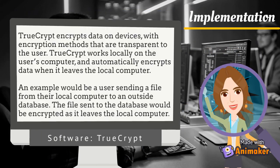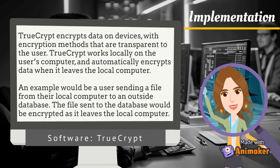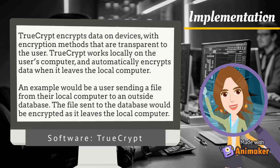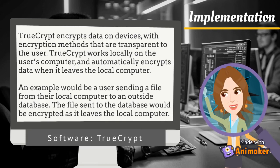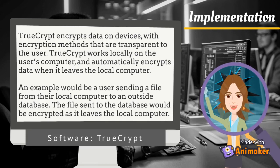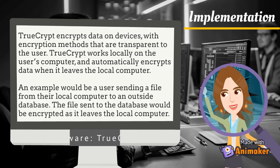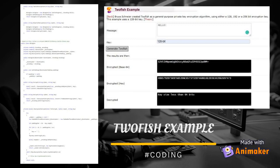TrueCrypt encrypts data on devices with encryption methods that are transparent to the user. TrueCrypt works locally on the user's computer and automatically encrypts data when it leaves the local computer. An example would be a user sending a file from their local computer to an outside database — the file sent to the database would be encrypted as it leaves the local computer.